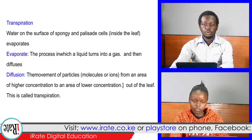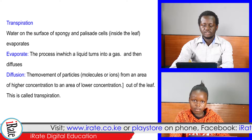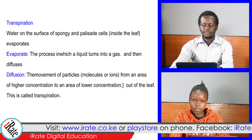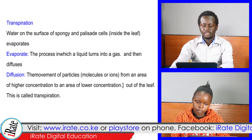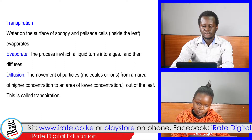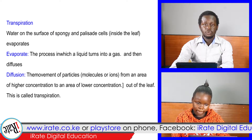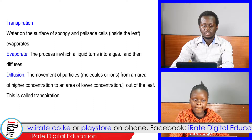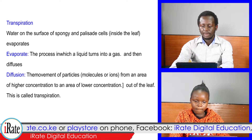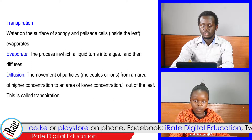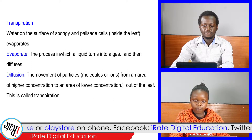Water on the surface of spongy and palisade cells inside the leaf evaporates. This is the process in which a liquid turns into a gas and then diffuses. Diffusion is the movement of particles — that is, molecules or ions — from an area of high concentration to an area of lower concentration, out of the leaf.